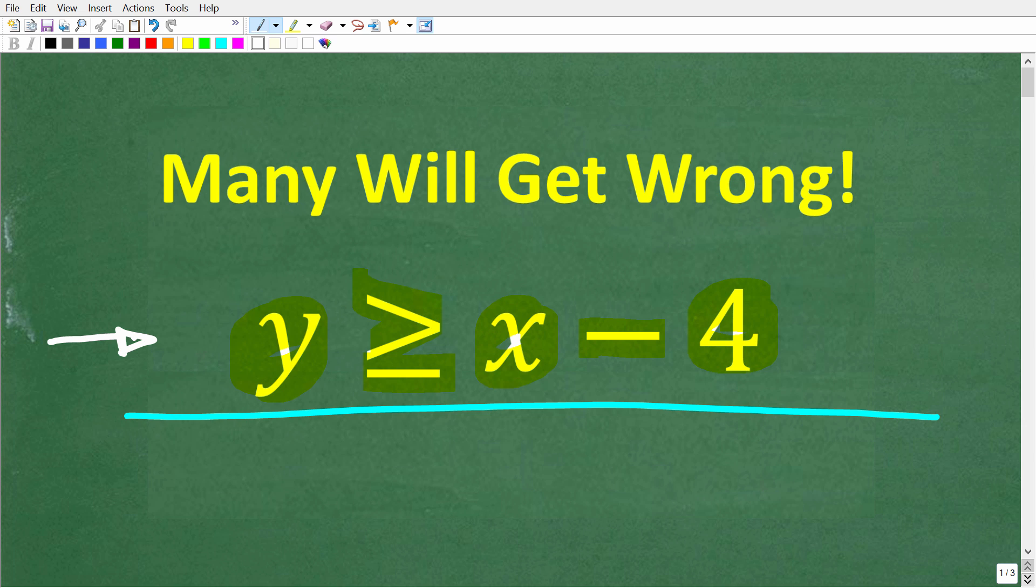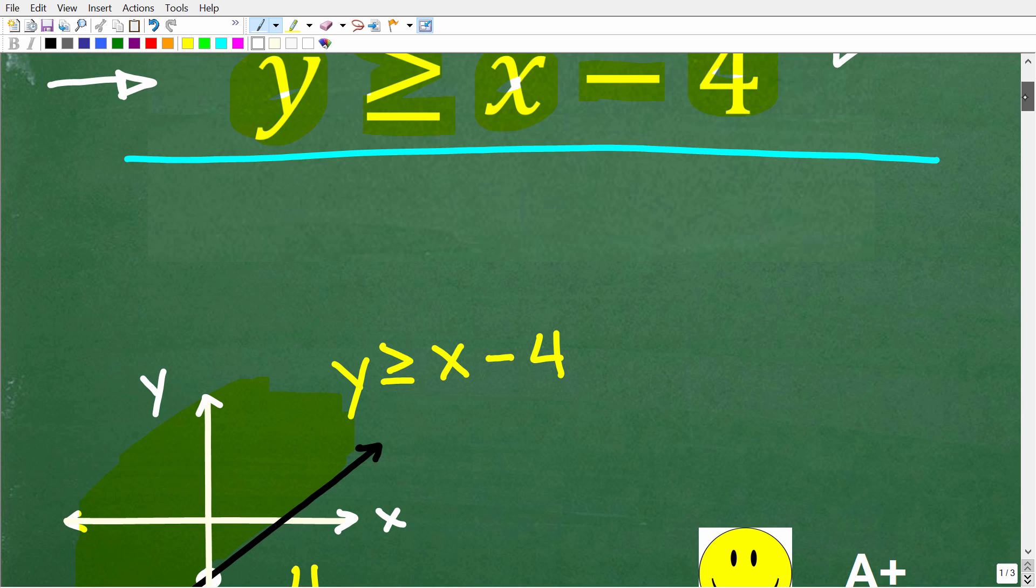I'm going to show you the correct solution in just one second. Then, of course, I'm going to solve this step by step. All right, so one more time we have y is greater than or equal to x minus 4. What is the answer? Well, let's take a look at the solution.